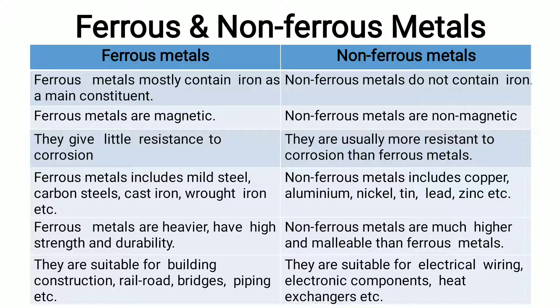Ferrous metals and alloys offer little resistance to corrosion, whereas non-ferrous metals are usually more resistant to corrosion than ferrous metals. Examples of ferrous metals include mild steel, carbon steel, wrought iron, and cast iron, whereas non-ferrous metals include copper, aluminum, nickel, tin, lead, and zinc.